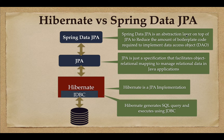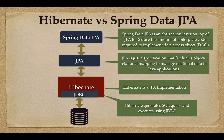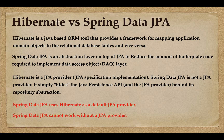On the other hand, Spring Data JPA is an abstraction layer on top of JPA to reduce the amount of boilerplate code required to implement the DAO layer. Internally, Spring Data JPA uses JPA APIs, and Hibernate implements those JPA APIs. Hibernate in turn uses JDBC internally to communicate with the database.